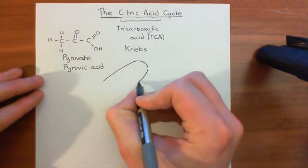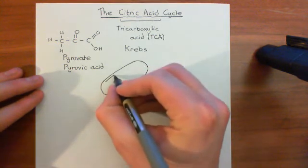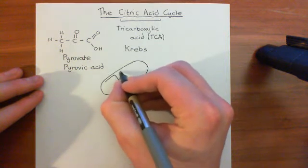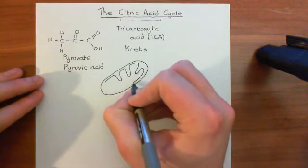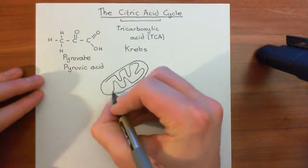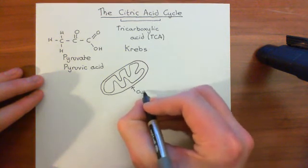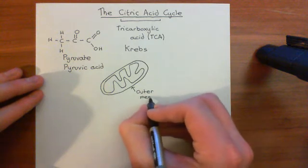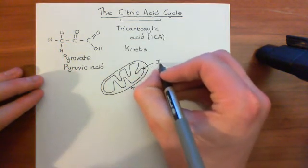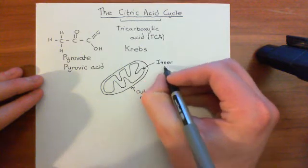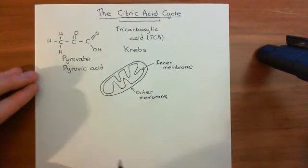Mitochondria have two membranes — an outer membrane and an inner membrane. The inner membrane is folded into invaginations known as cristae. The space between the two membranes is known as the intermembrane space. The outer membrane is quite easy to cross — it has large pores through which things can move, so it's not particularly tight.